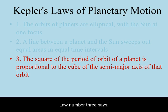Law number three says that the square of the period of orbit of a planet is proportional to the cube of the semi-major axis of that orbit.